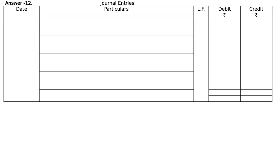The question asks what journal entries would be passed for the discharge of unrecorded liabilities on the dissolution of a firm of partners A and B. Part A: There was a contingent liability in respect of bills discounted but not matured of Rs 18,500. One acceptor of a bill of Rs 2,500 became insolvent and 50% was recovered. The liability on account of bills discounted at dissolution has not so far been recorded.